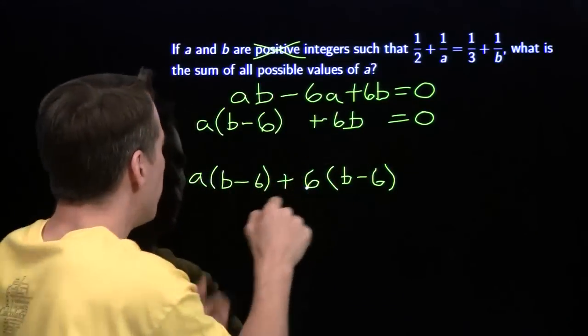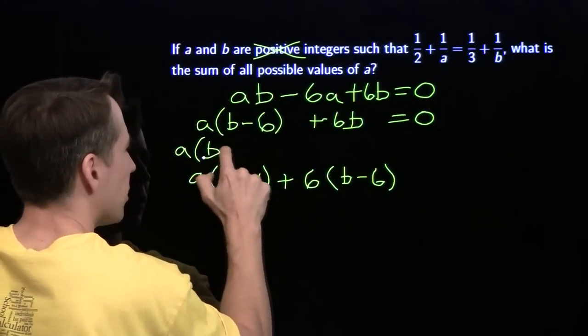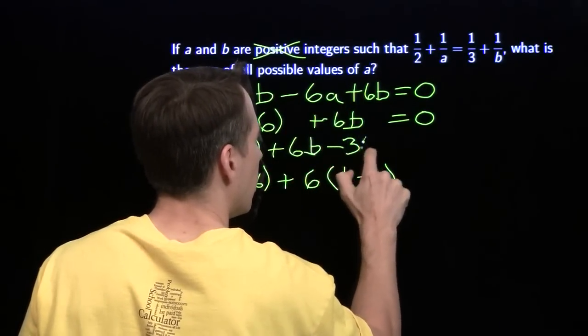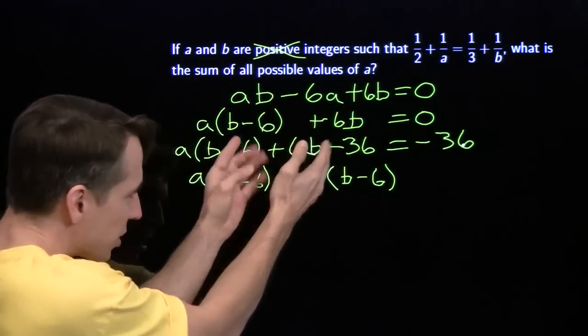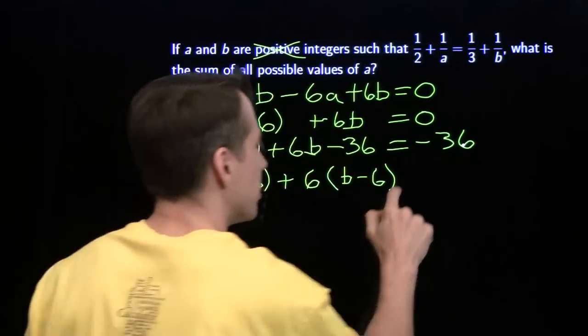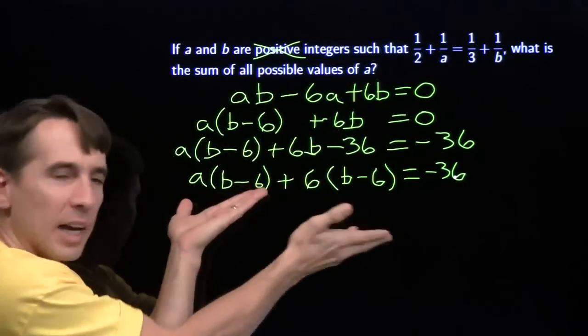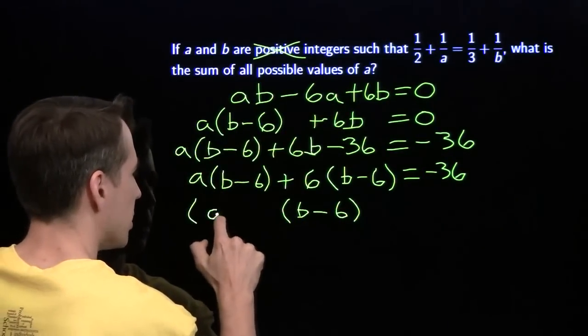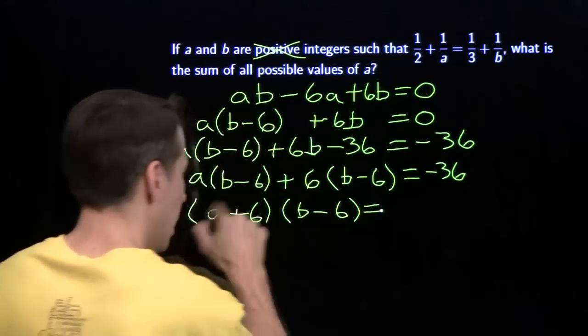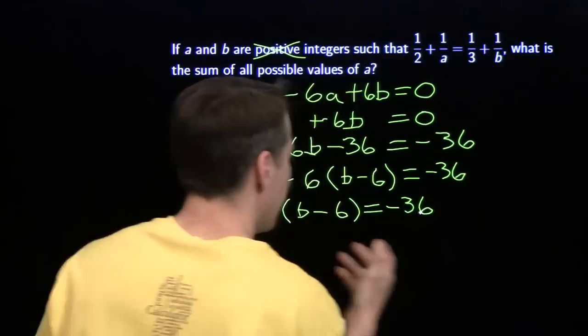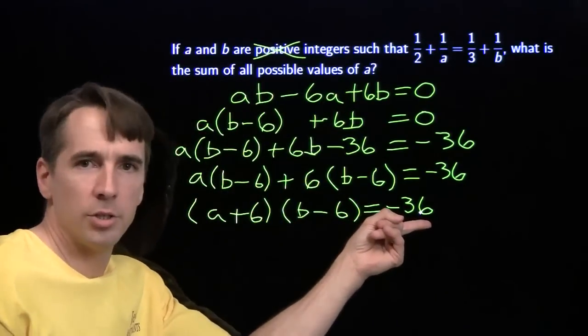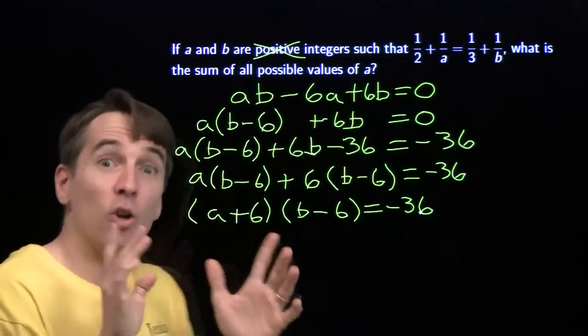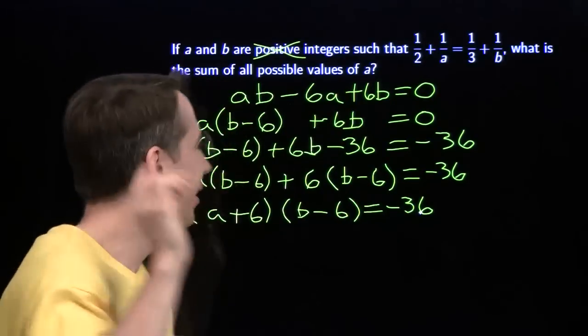If I subtract 36 from both sides, now when I factor 6 out of these two terms, I get the b minus 6 that I want. This is something I can factor. I can factor the b minus 6 out. I factor my b minus 6 out and I'm left with the a plus 6 as my other factor. a plus 6 times b minus 6 is negative 36. I factored. This kind of trick we did here is called Simon's favorite factoring trick, which is really fun to say.